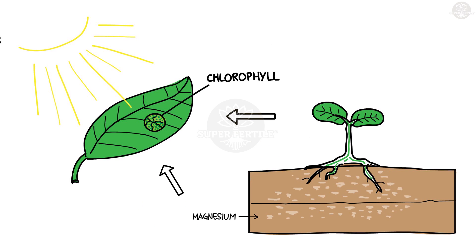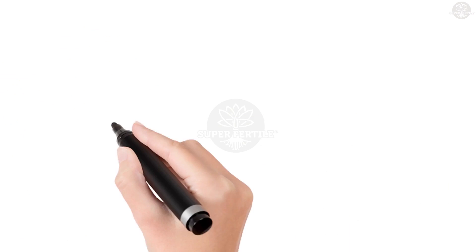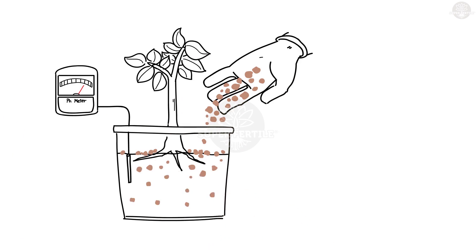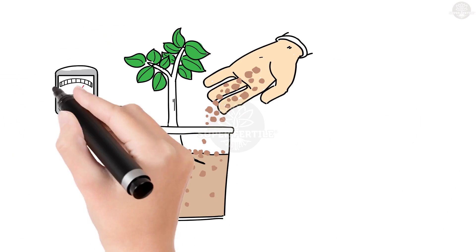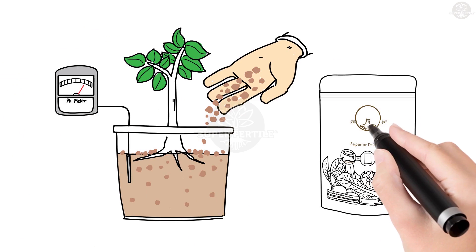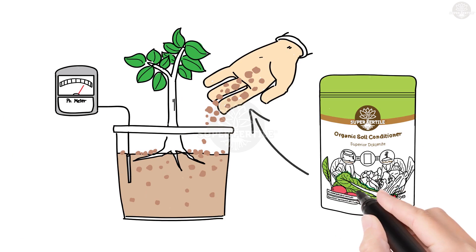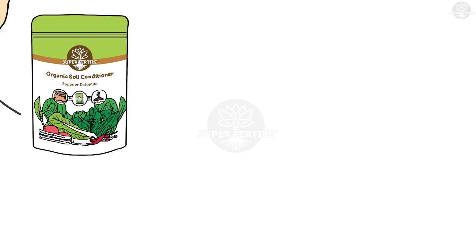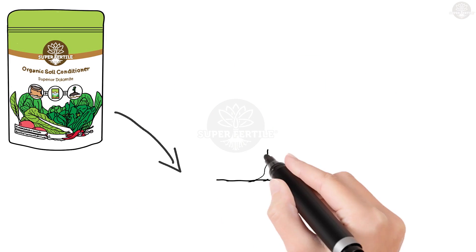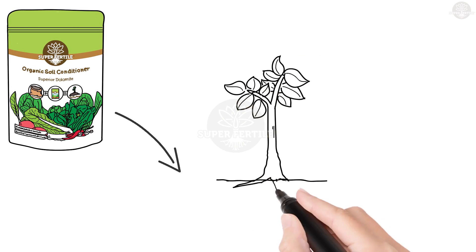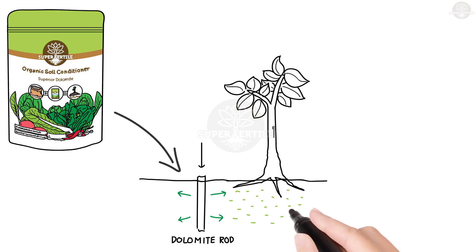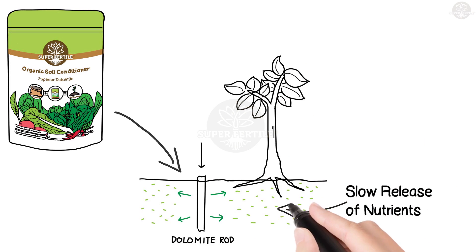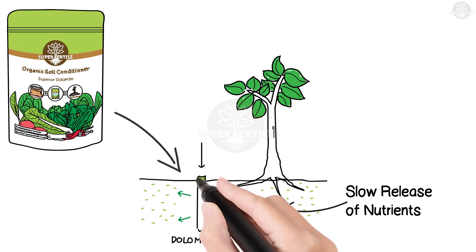Conduct a soil test to determine how much dolomite to use, then simply sprinkle Superfertile Superior Dolomite onto the topsoil. Alternatively, a Superfertile dolomite rod can be inserted into the soil, which slowly releases nutrients over a long period of time.